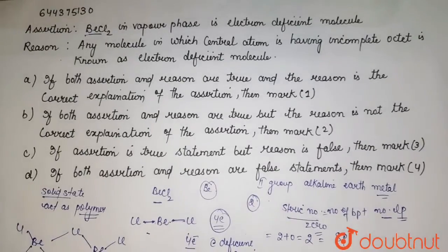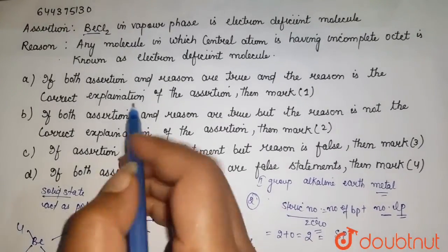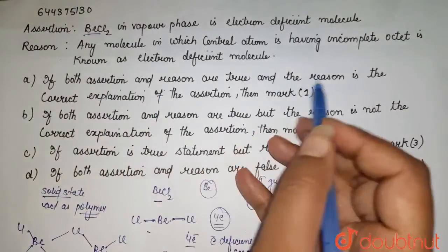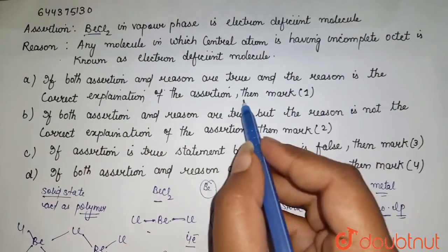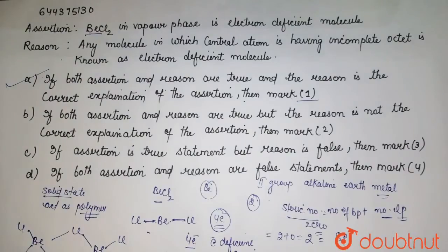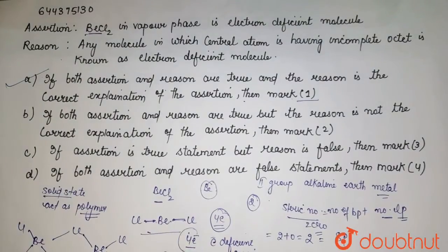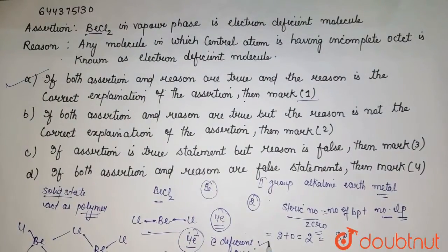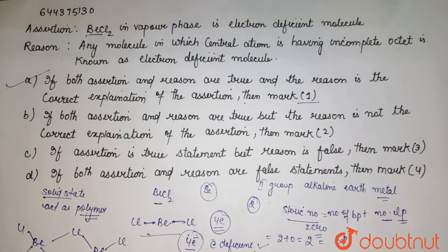So according to this, your first statement: if both your assertion and reason are true and the reason is the correct explanation of your assertion, then mark one. So your A option will be the right, because your BeCl2 in vapor phase exists like this, is a four electron species. It means it is electron deficient also. So your A is the right answer.